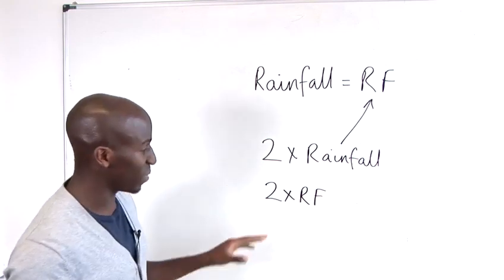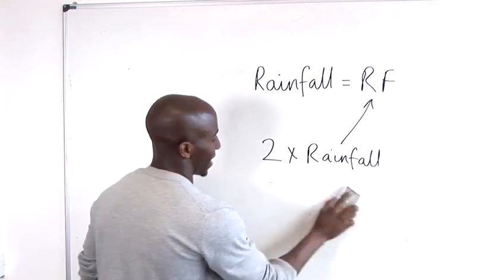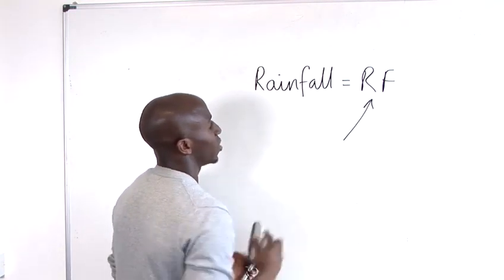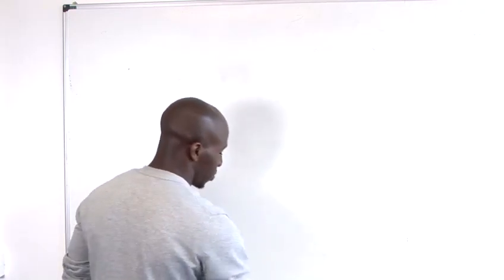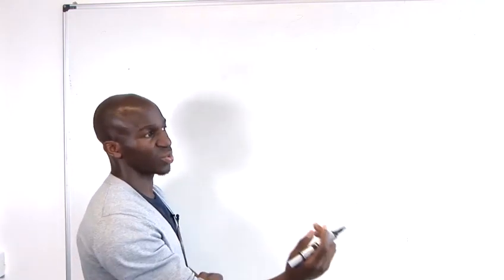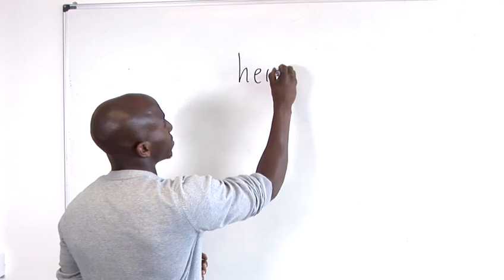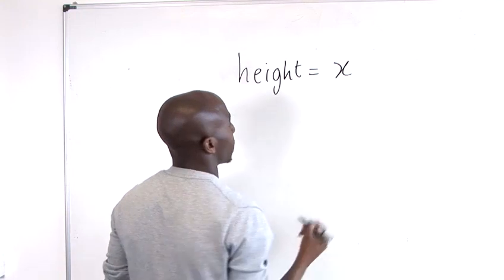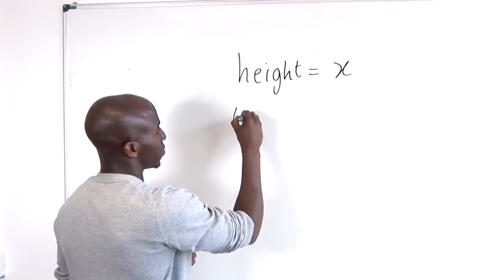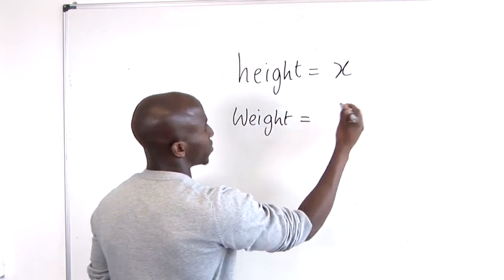Now, the one that you're going to be commonly using most of the time is X. So X is a good term for the unknown. So when you want to relate to, say, the individual people's heights within your class, you might say height is equal to X. Weight, which is another variable, might be equal to W.